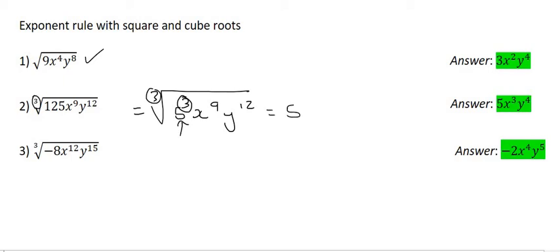So then it just gives us 5 to the power of, well, 3 divided by 3 is just 1, and 5 to the power of 1 is 5. Then with the x's, we're going to say 9 divided by 3, so that's just going to be x to the 3. And then it's going to become y to the power of 4, because we're saying 12 divided by 3.